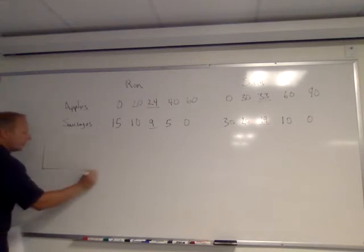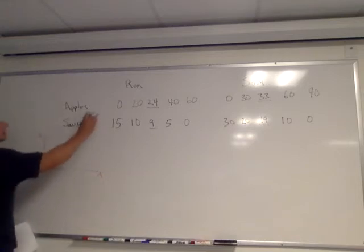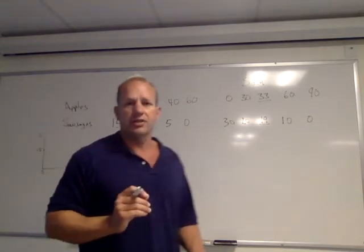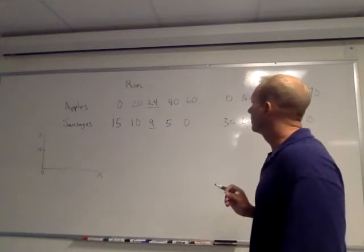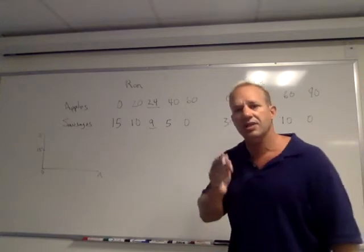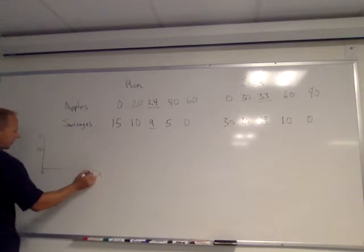Let's put sausages here and apples here. What I'm saying is that this is one combination that Ron can do. Let's say that this is 15 sausages, and that is zero apples. So that is this point right here plotted there. What if he devotes all of his resources to making apples? He can make a lot of apples. He could make 60.